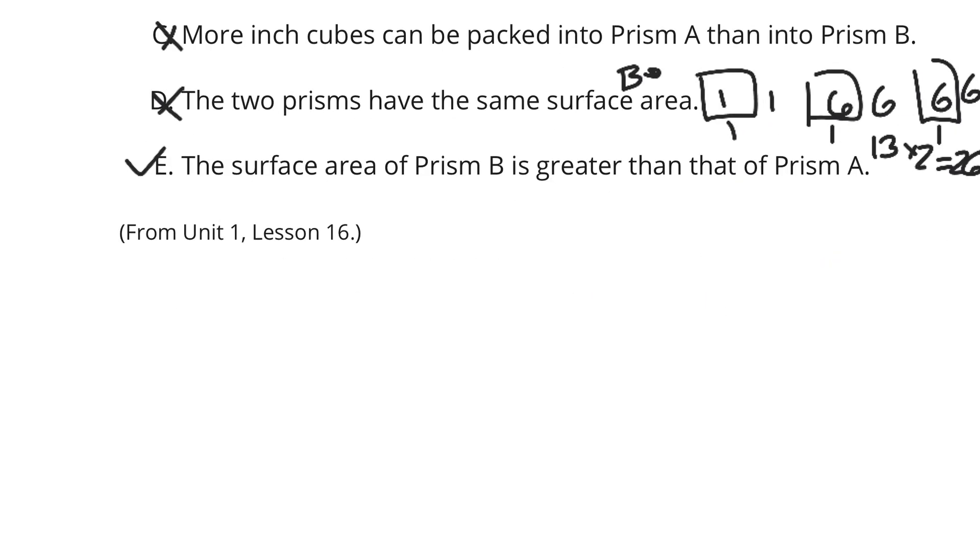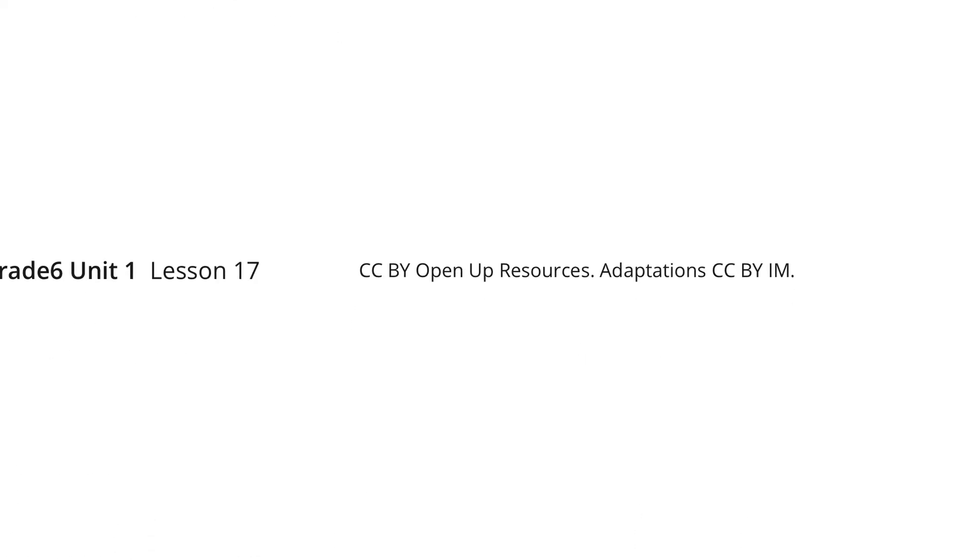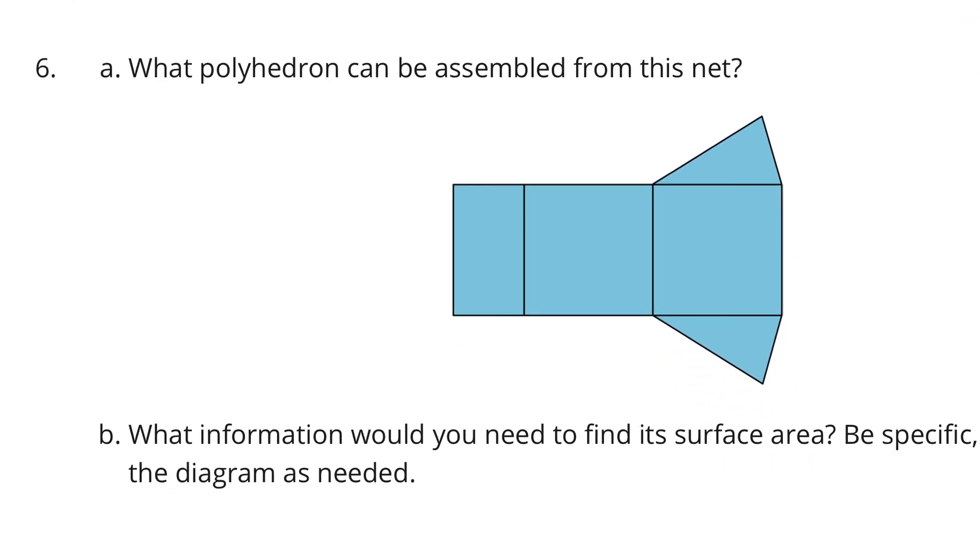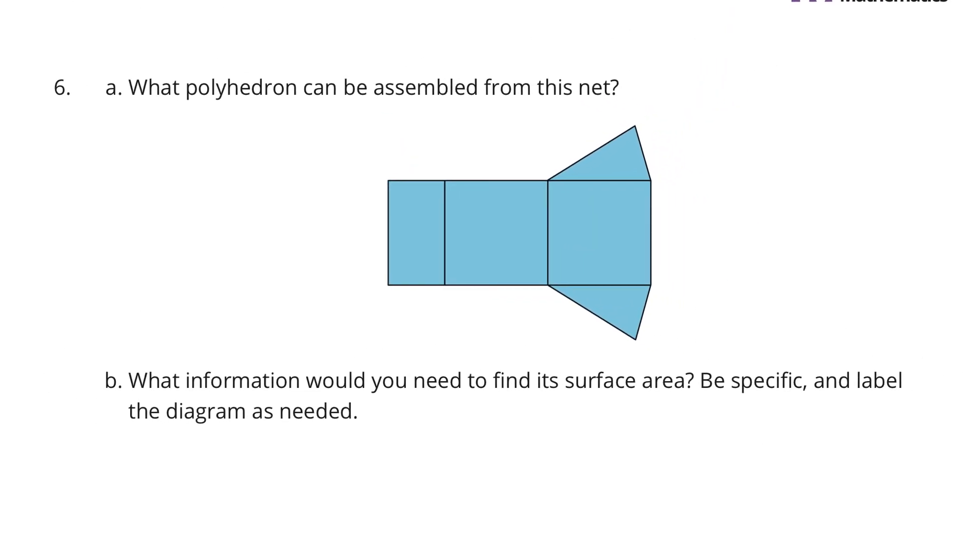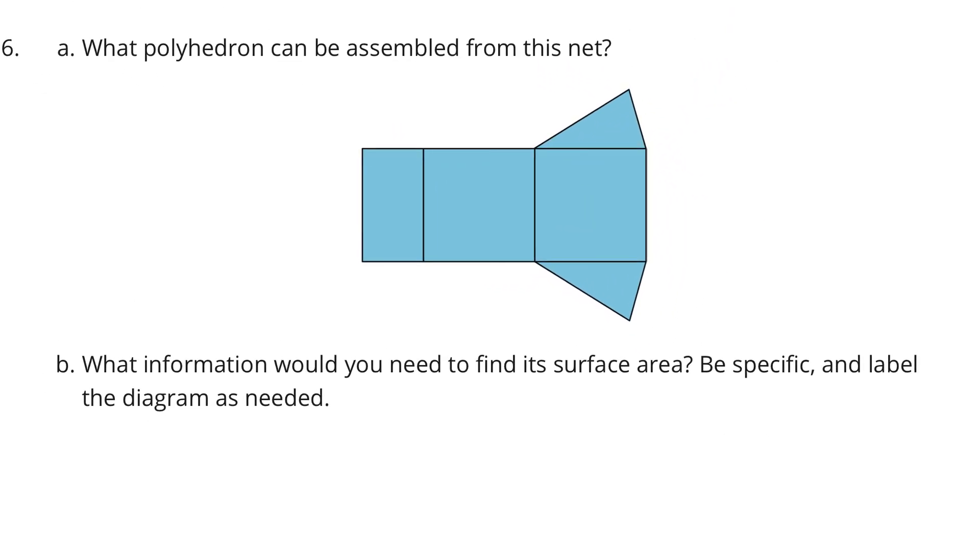Let's look at question 6. And to look at question 6, what polyhedron can be assembled from this net? What information would you need to find its surface area, be specific, and label the diagram as needed? Well, I see with my little eyes, I spy with my little eyes, these two triangles, and they are special, because that tells me that those are the base. And there's two bases that are triangles, so this would be a triangular prism.